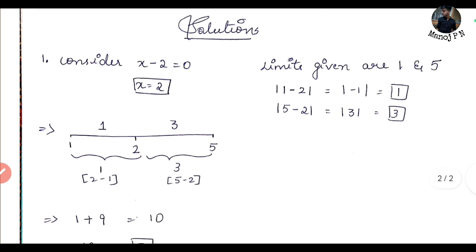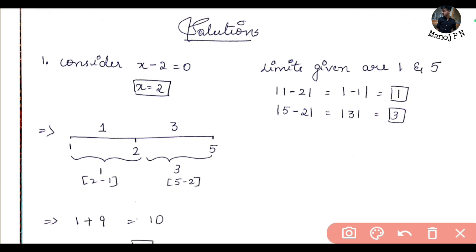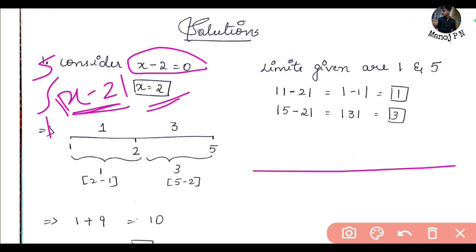Moving to the solutions part. The question is integration 1 to 5 of x minus 2 mod. Now I will tell you: x minus 2 equals 0, so x is equal to 2.